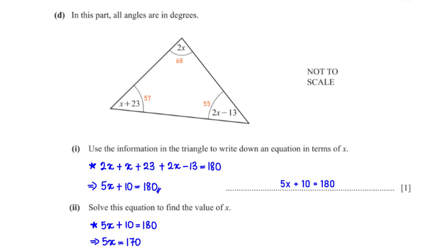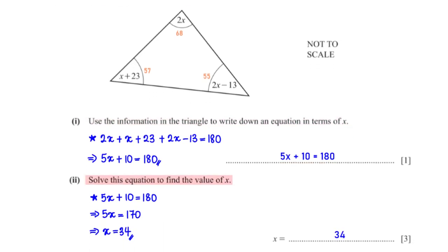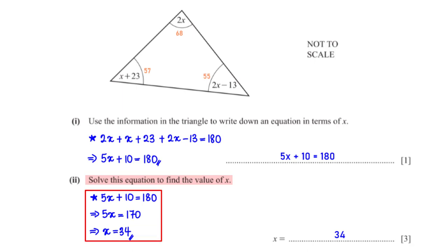All angles are in degrees. Use the information in the triangle to write down an equation in terms of x. The sum of angles in a triangle equals 180 degrees, so: 2x plus (x + 23) plus (2x − 13) equals 180. Grouping like terms: 5x plus 10 equals 180. Solve for x — subtracting 10 gives 5x equals 170, then dividing by 5 gives x equals 34.